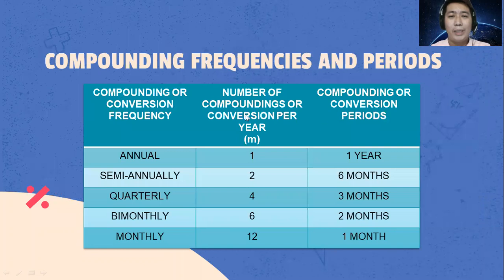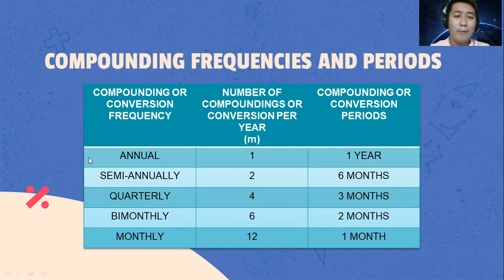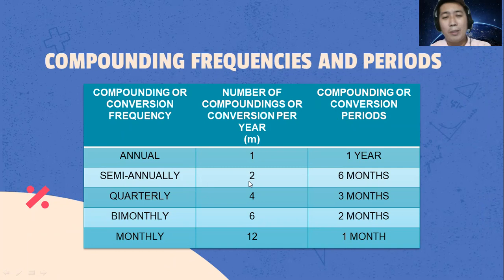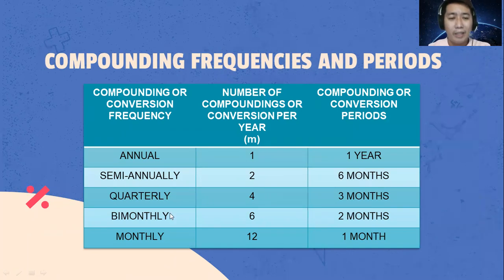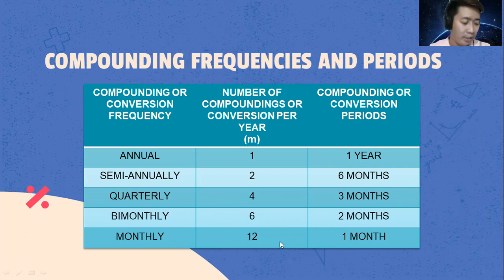These are the compounding frequencies and periods. Annual: one compounding per year. Semi-annually: two, every six months. Quarterly: four compoundings per year, payment every three months. Bi-monthly: six. Monthly: twelve compoundings per year.